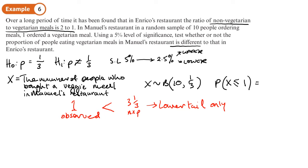We grab our calculators, go to Menu, then 7 for Binomial CD. Set variable X to 1, n to 10, and probability to 1/3. Note: n is 10, not 20. We get a probability of 0.1040 to four decimal places.